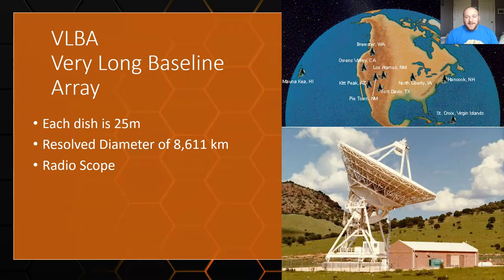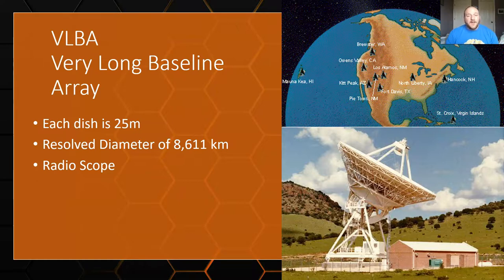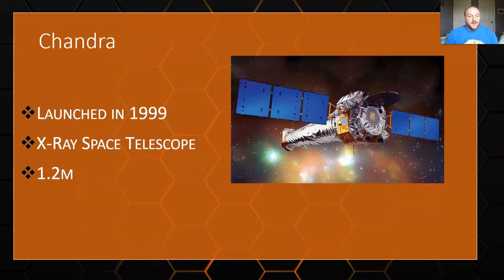The VLBA — the Very Long Baseline Array — uses a whole bunch of radar dishes stationed across North America with a resolved diameter of 8,600 kilometers, making it an incredible scope. On the other end of the spectrum, very short wavelengths like X-rays typically get scattered by our atmosphere and don't reach Earth. But we do have scopes designed to observe them, and they are in space. Probably the most famous is Chandra, an X-ray telescope launched in the late 1990s with a 1.2-meter objective. We also have gamma ray scopes in space as well.